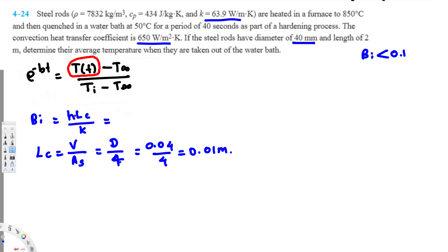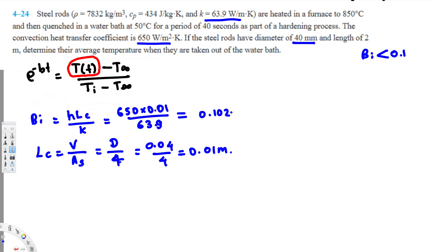To find the Biot number, we plug in: Bi = 650 × 0.01 / 63.9, which gives 0.102. We need the Biot number to be less than 0.1, and this is very close to 0.1, so we can still treat this as a lumped system. This is almost equivalent to 0.1, so we proceed with lumped system analysis.